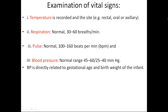Examination of vital signs: temperature is the most important parameter to be maintained in the newborn. It is recorded at sites like rectum, oral, or axillary. Generally we prefer axillary temperature. Normal respiratory rate is 30 to 60 breaths per minute. Pulse rate is 100 to 160 beats per minute. Blood pressure — we don't generally record it, but the normal range is 45 to 60 systolic and 25 to 40 diastolic. Blood pressure is directly related to gestational age and birth weight of the infant.